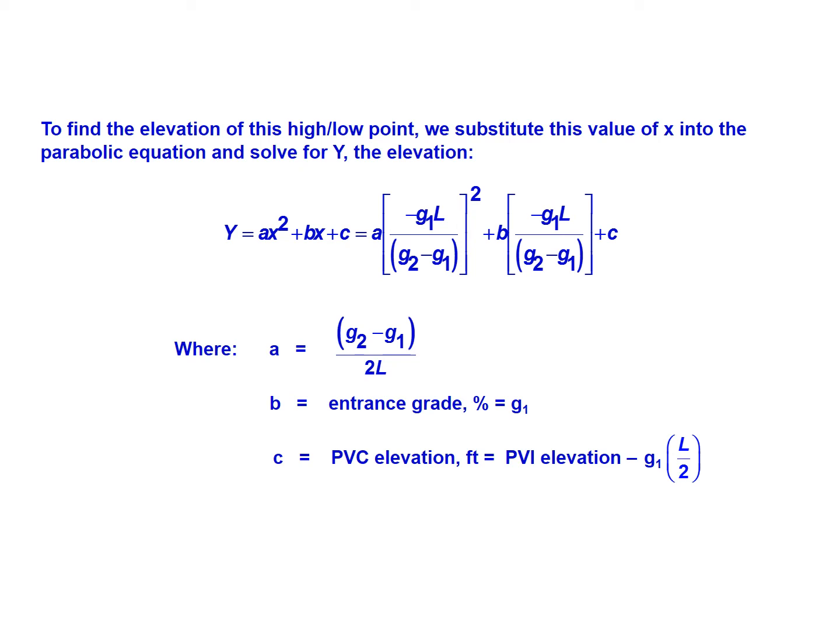Now, we usually want to find that elevation. So the x only gives us the location of that high or low point. Usually we're going to actually want to find what the elevation is, so we'll know both where it's located and what that actual elevation is. So we plug in our components. We start with a parabolic equation. We're going to plug in x in the components of the parabolic equation where it's applicable. So we're going to plug in that negative G1 times L divided by G2 minus G1 where x belongs in the parabolic equation.